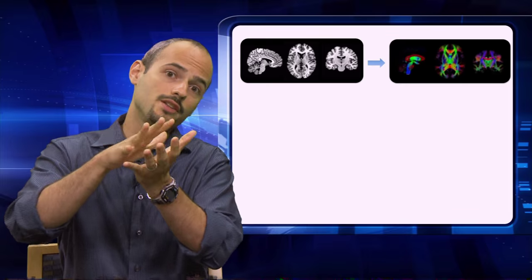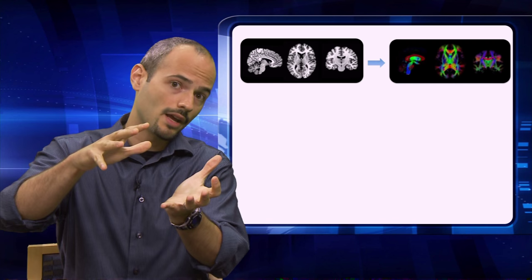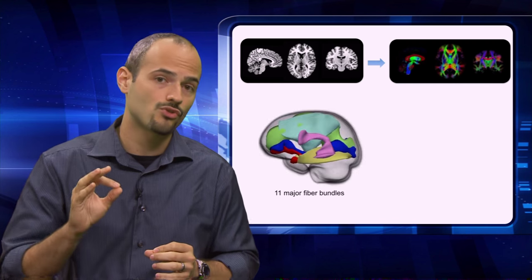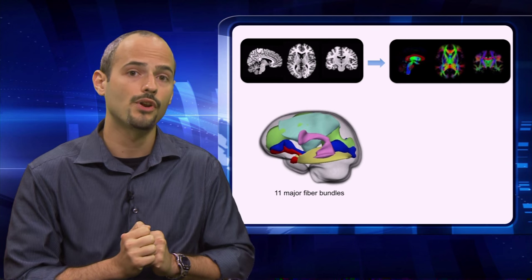Then based on this orientation, we're going to group the different fiber tracts into 11 major tracts. That's what we show here in the lateral view of the brain.